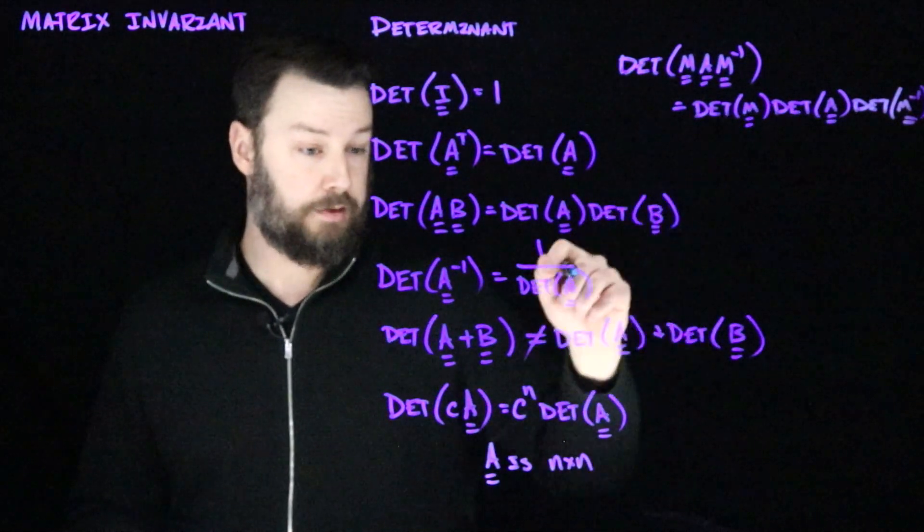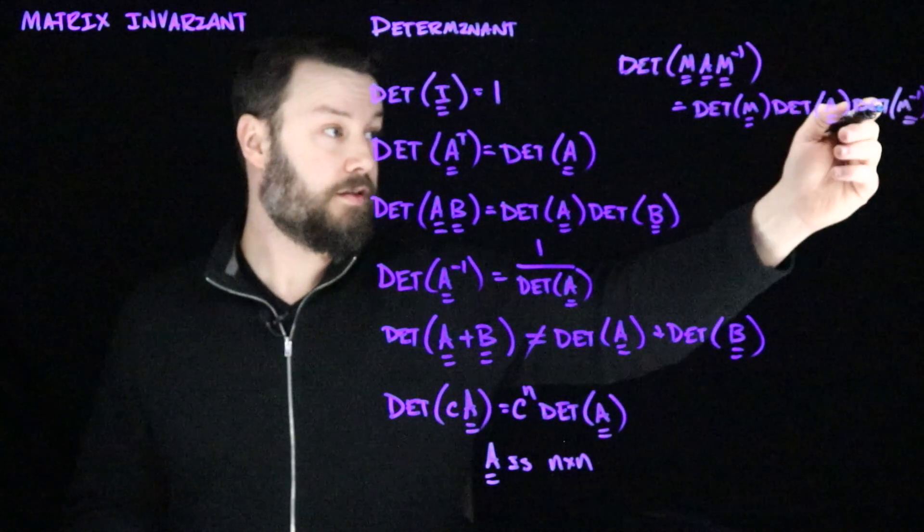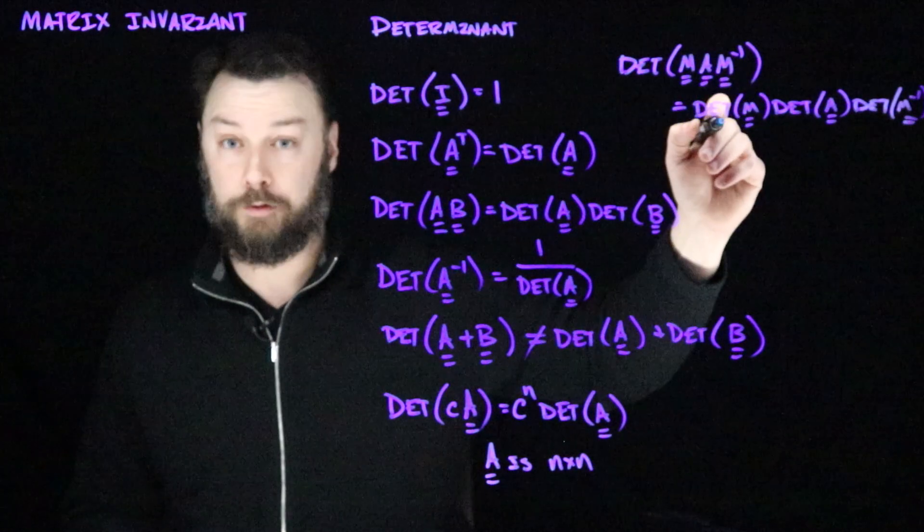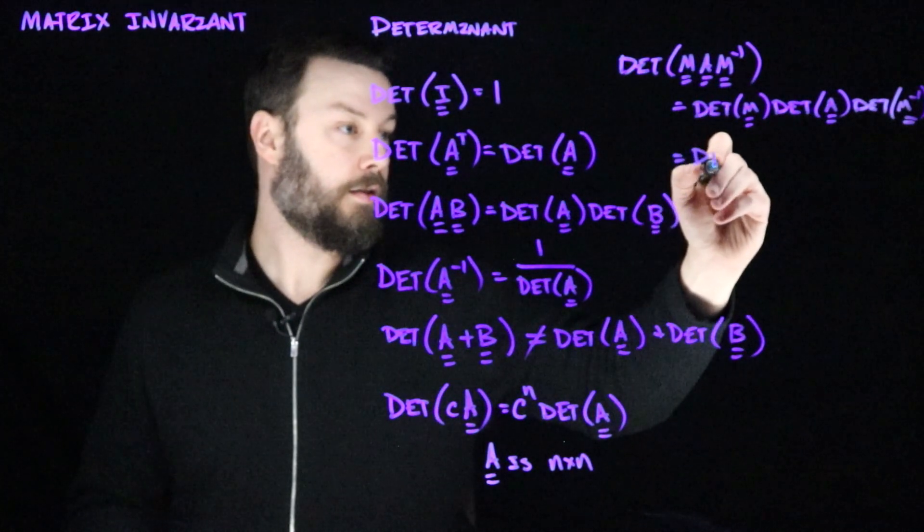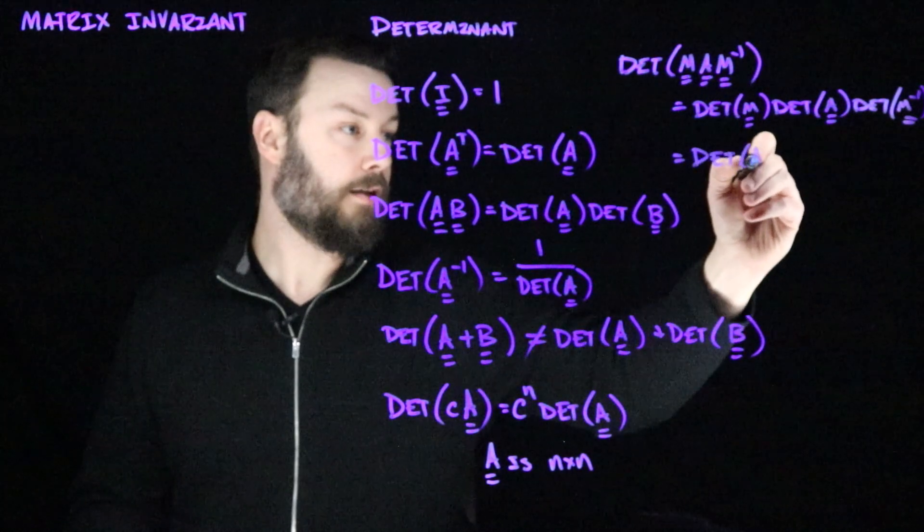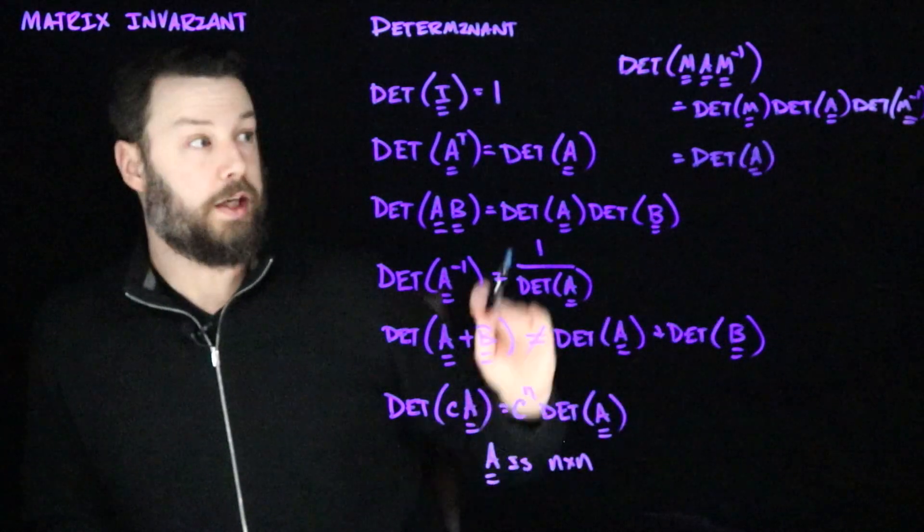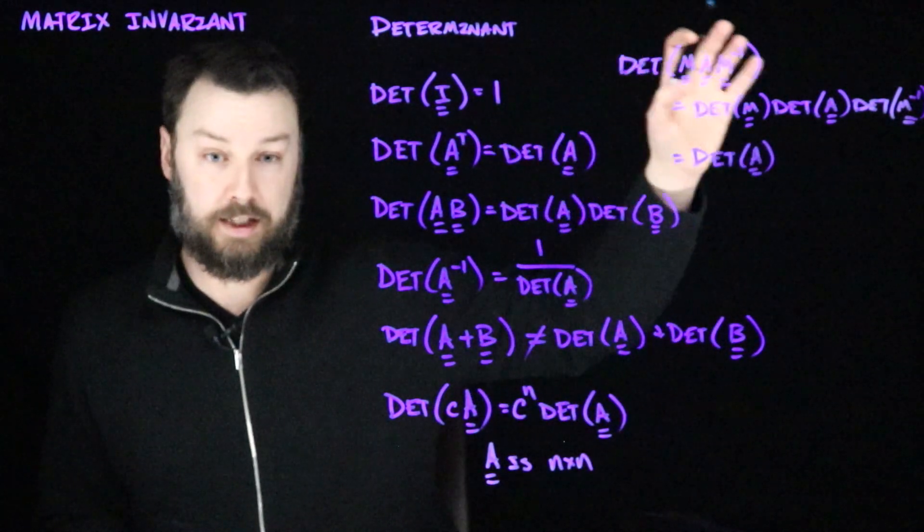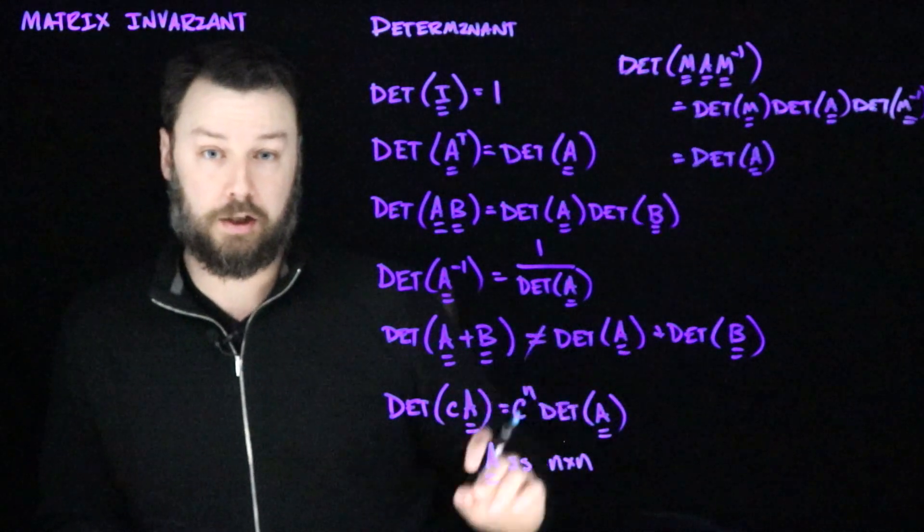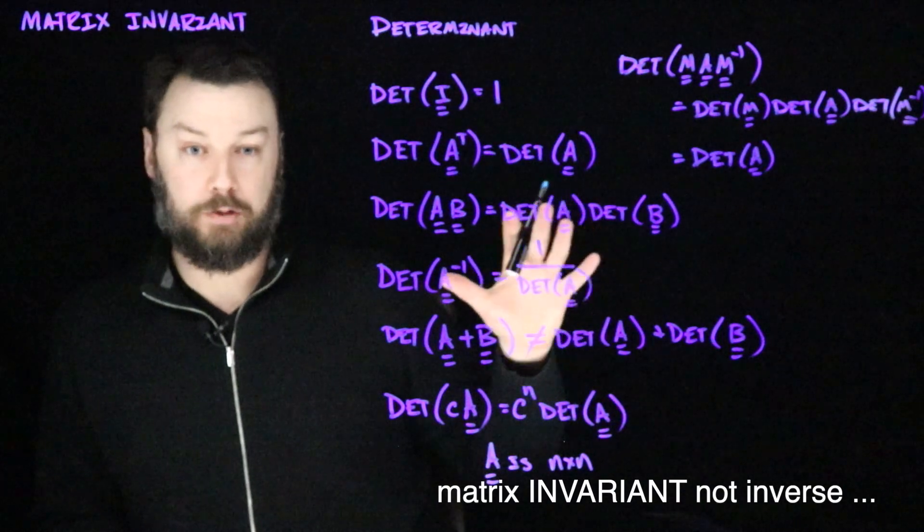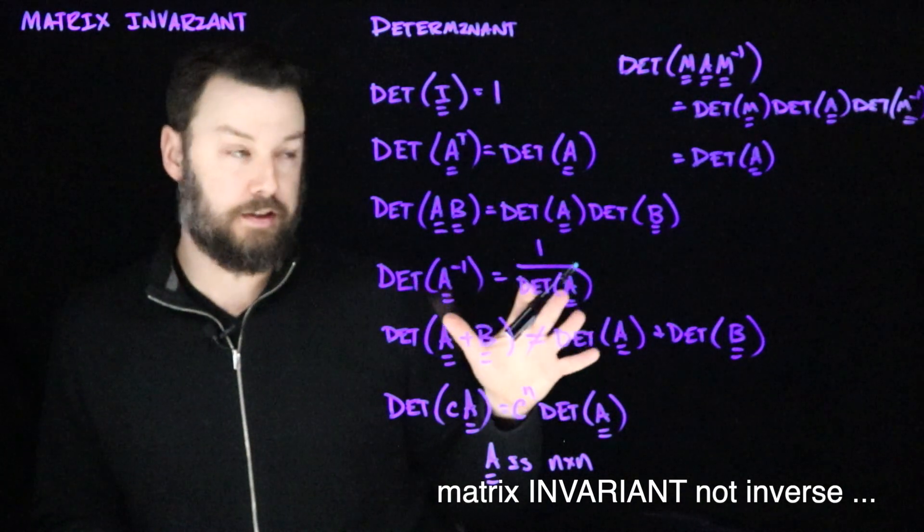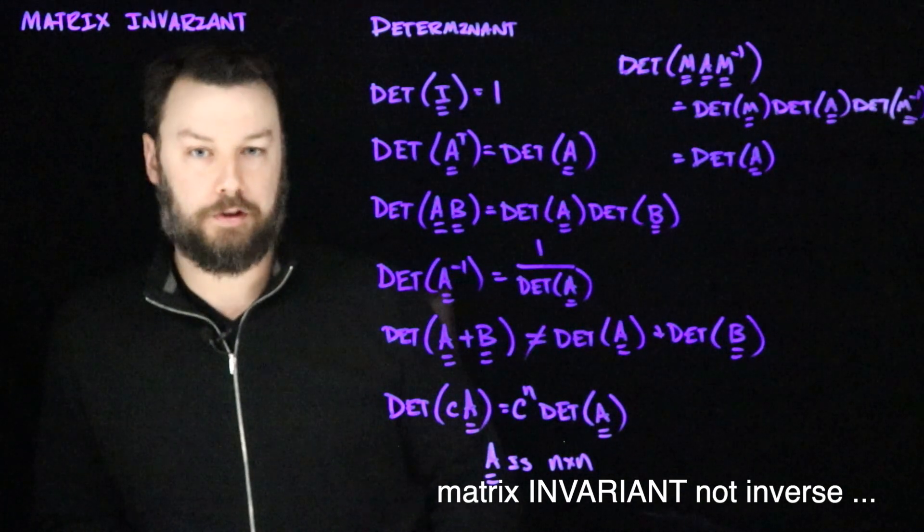And so now, if we look at this property, we can see that this is going to be one over this. And so we wind up with this just being det A. So hitting it on either side with M and M inverse doesn't change the value of the determinant. So it is also a matrix invariant in the way that we've been talking about it. That is a change of basis does not change the value of the determinant.